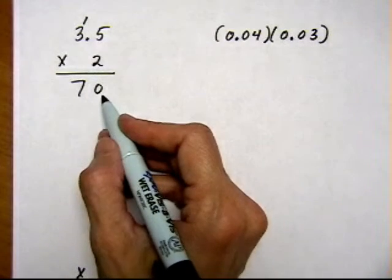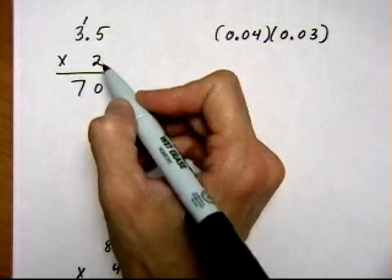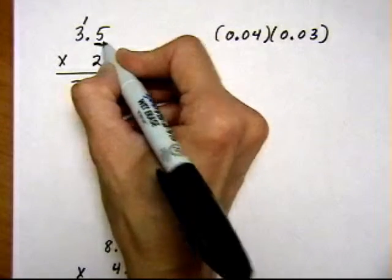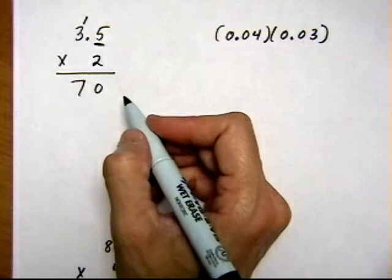Now what I'm going to do for the decimal is I'm going to count how many decimal places are in the multiplying numbers. So here's one decimal place right there, the 0.5. And that's it.